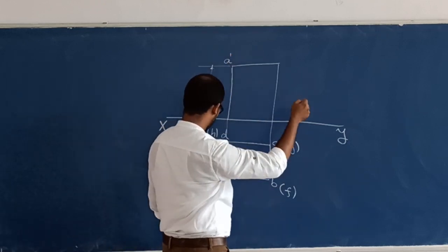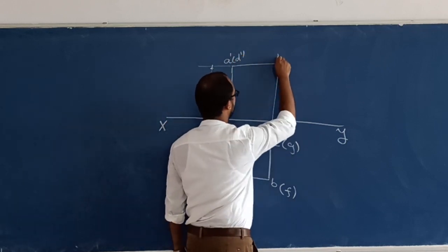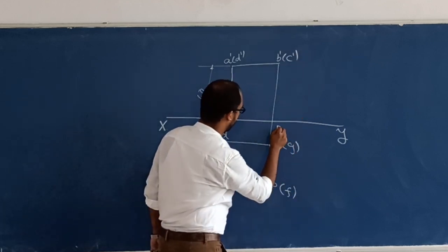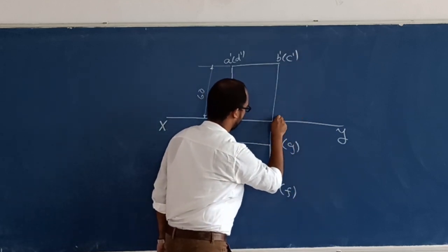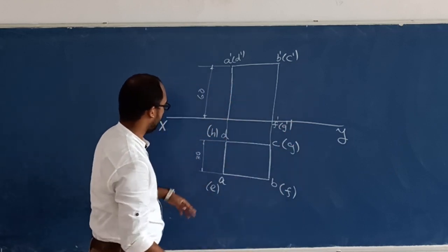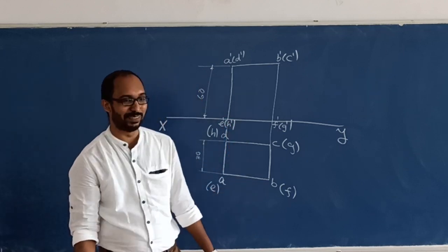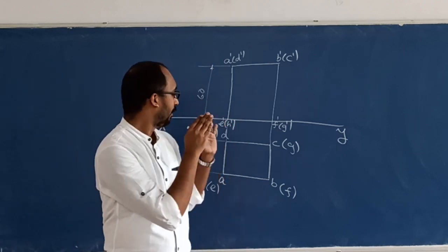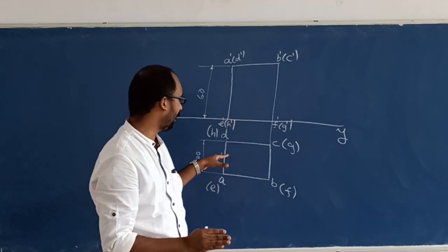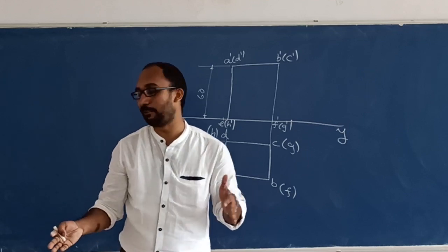A dash, D dash, B dash, C dash. The bottom point is D dash. A dash is invisible, then A dash is visible. Then H dash is invisible. So we have a front view.